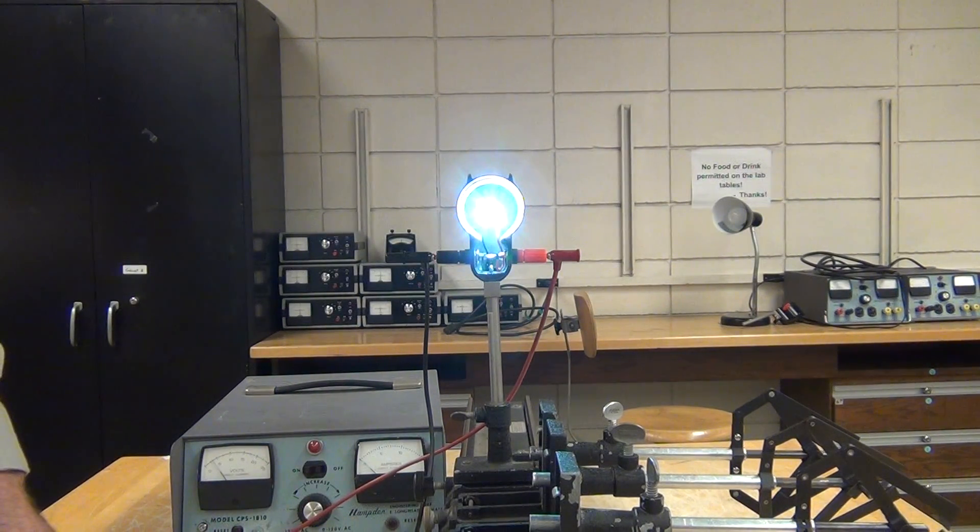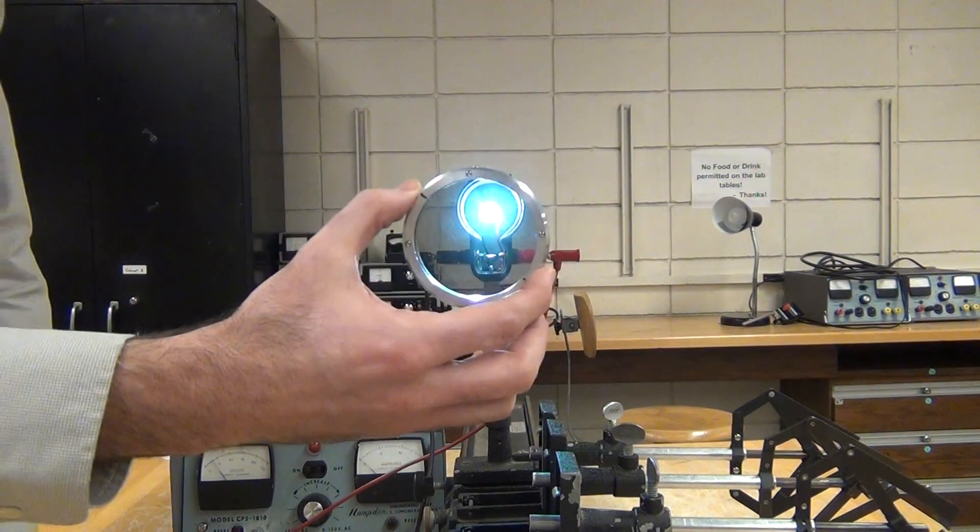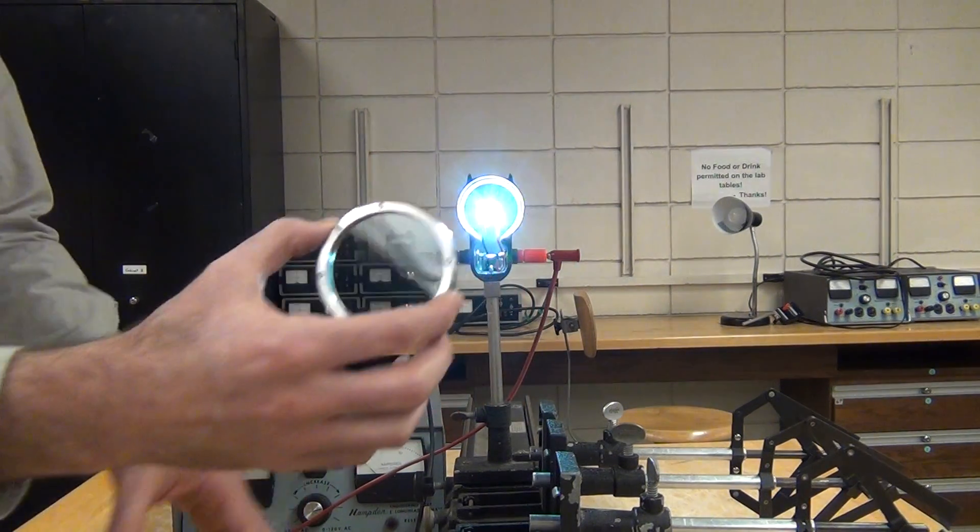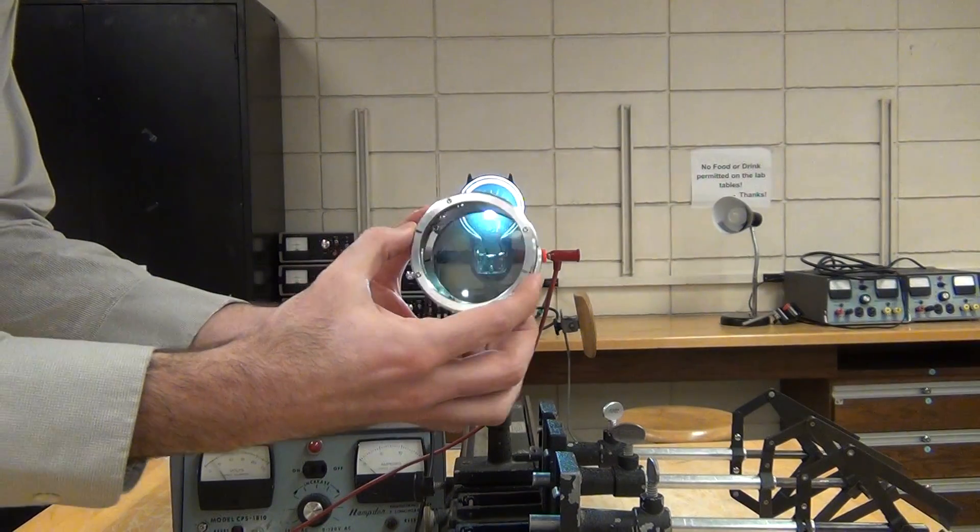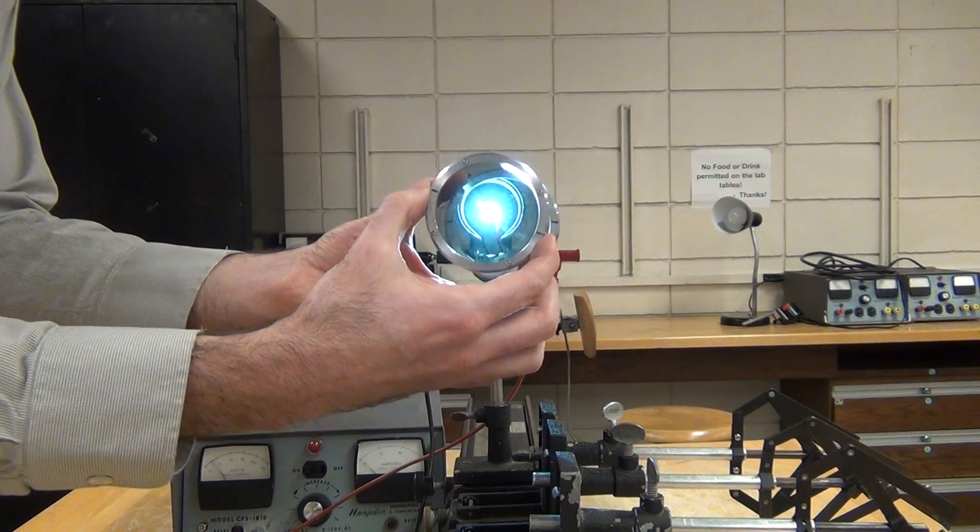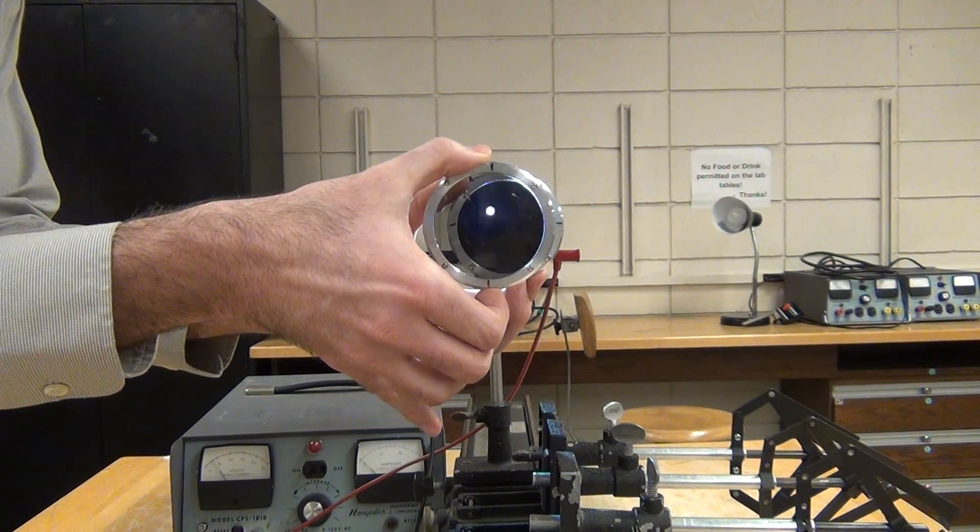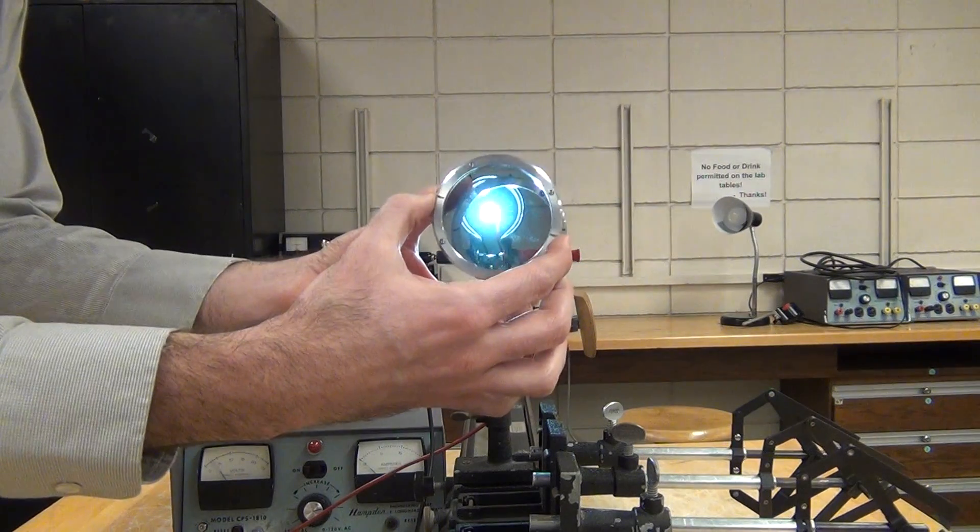Once the LED is on, you can take some of your polarizers and investigate what happens to the light through those filters as you rotate one filter with respect to the other.